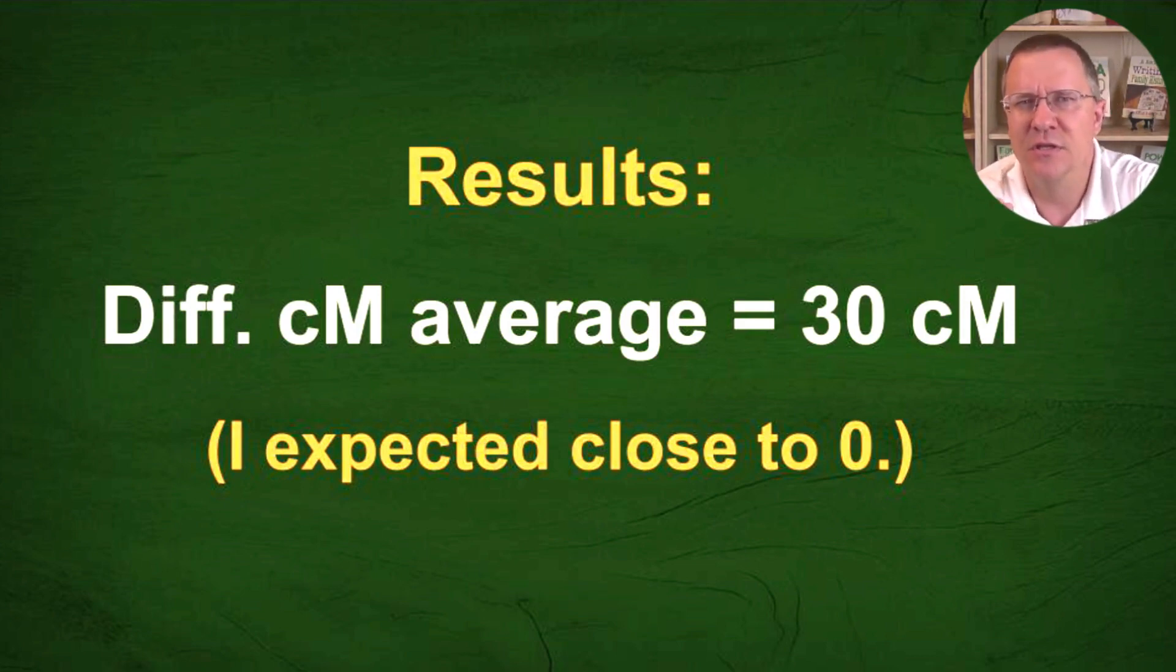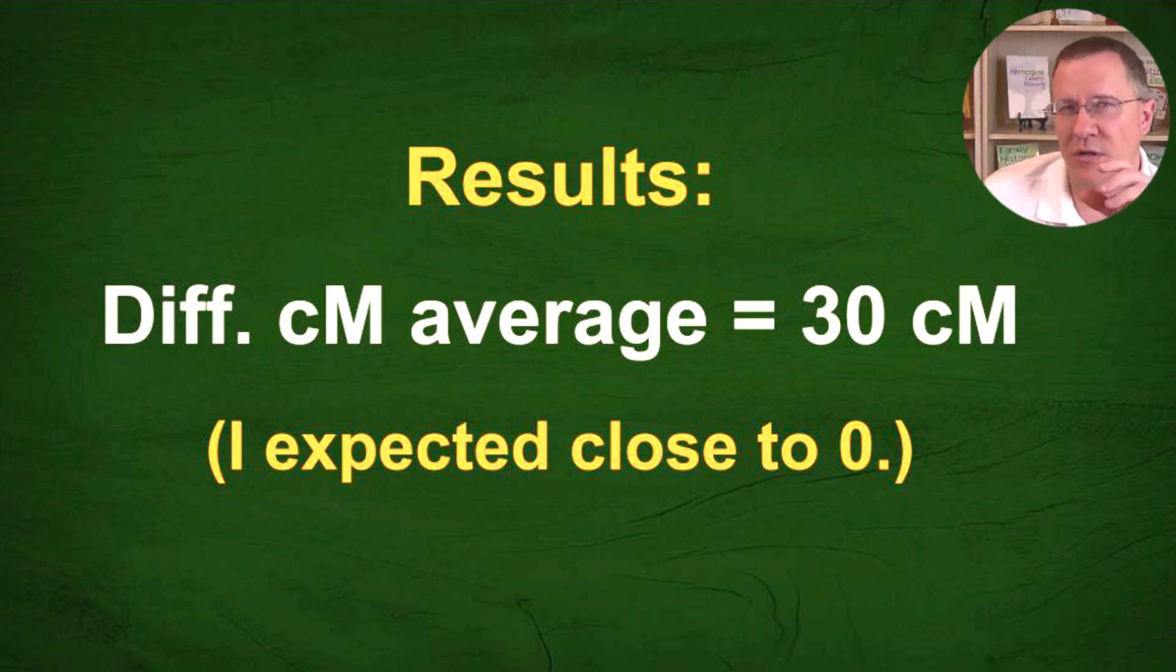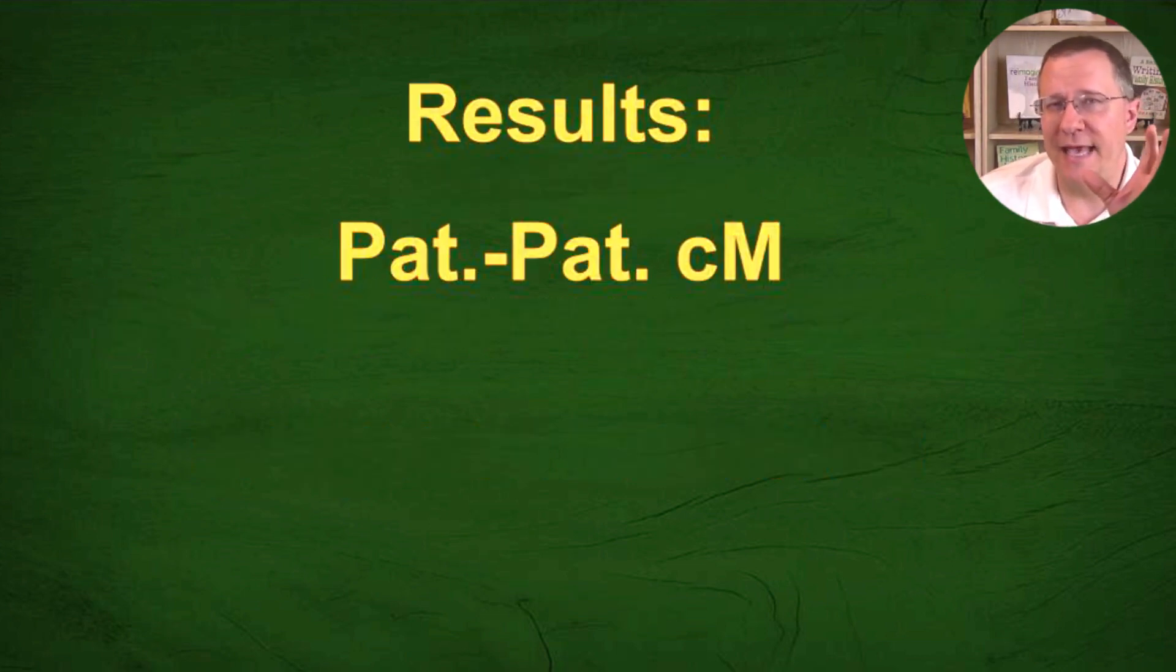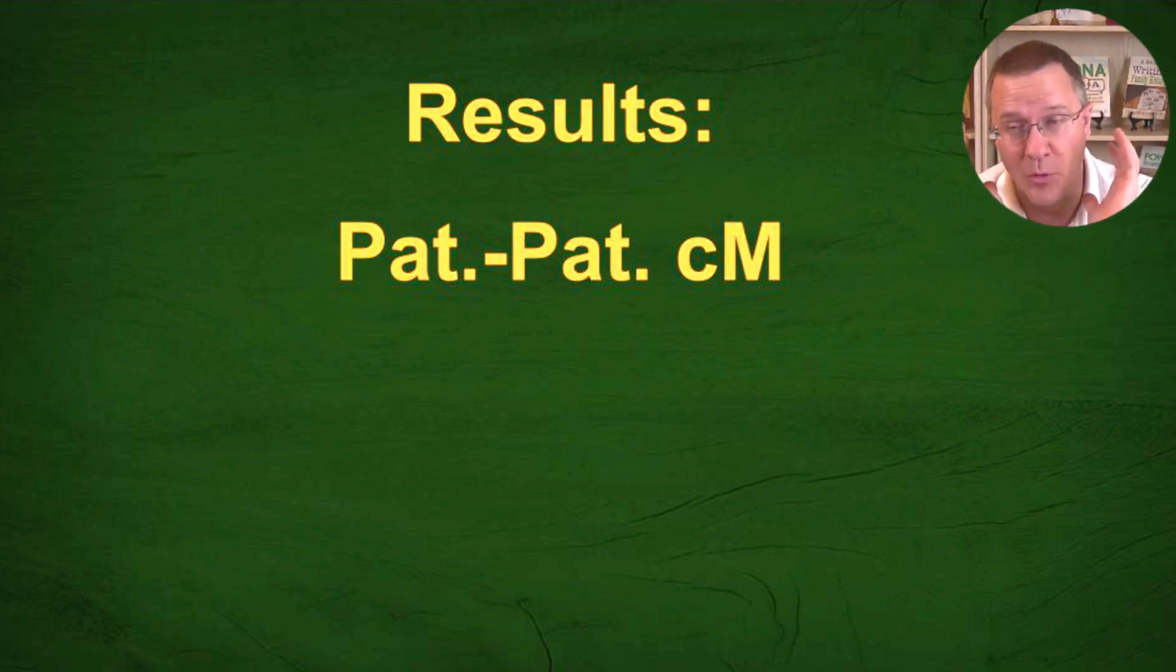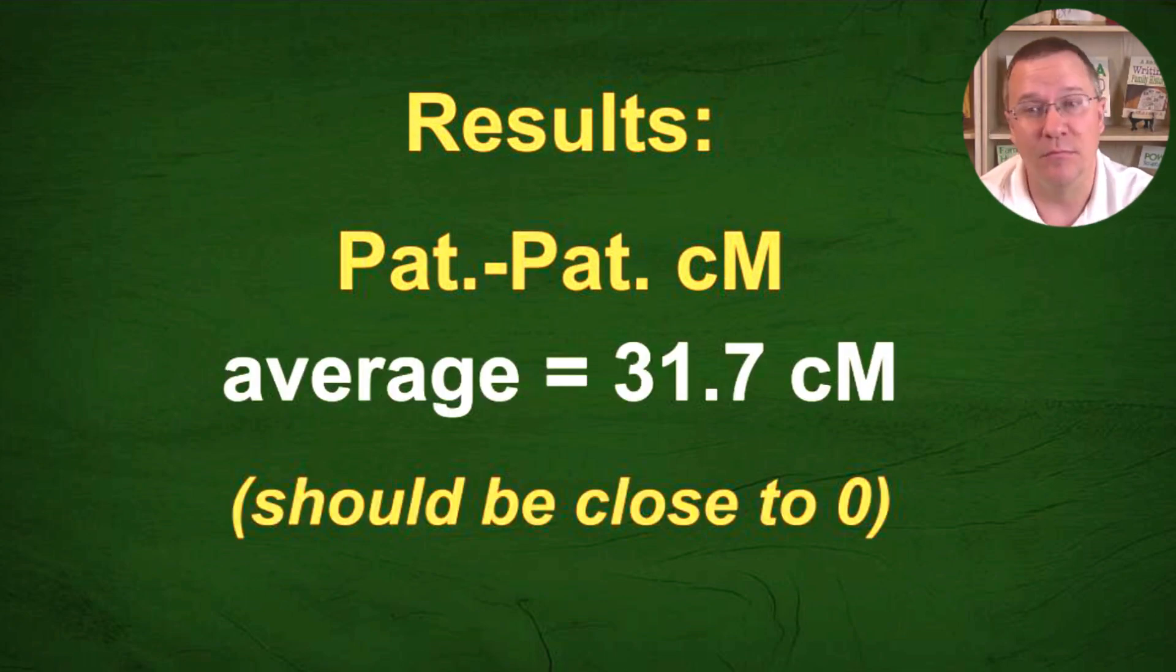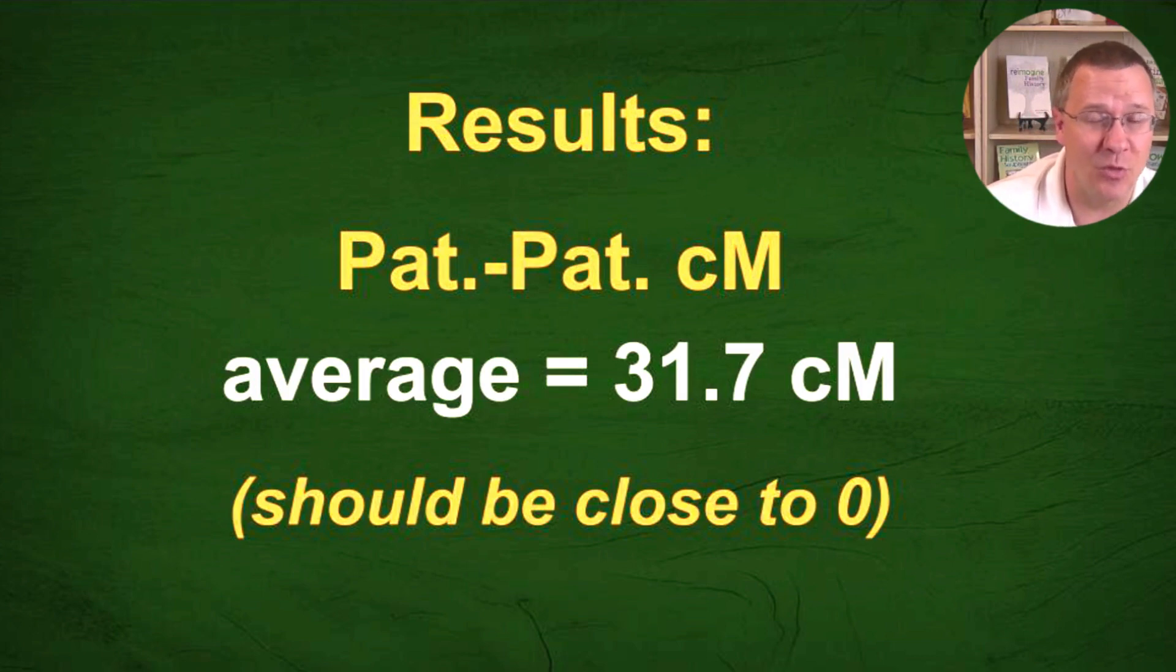Well, my results from this were actually the difference was about 30 centimorgans on average that I shared more than him. And again, I expected this to be close to zero. And I thought, okay, that is odd. So let me try something different to see if this is just an outlier. So what I did then is I looked at me and one of my brothers. So again, we're both paternal, represent paternal chromosomes. But again, just because of the randomness of DNA, we should be close to zero as far as the average difference between it. Some will be more, some will be less.